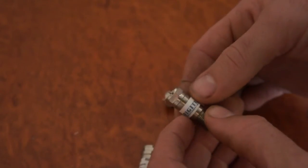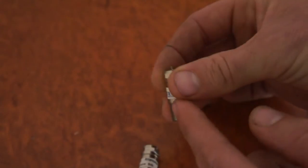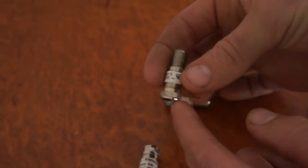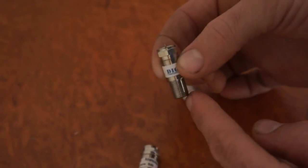They will retard the signal quite a bit. You can insert them before the splitter, at a wall plate, or at your antenna, but they work best if put in before the splitter.